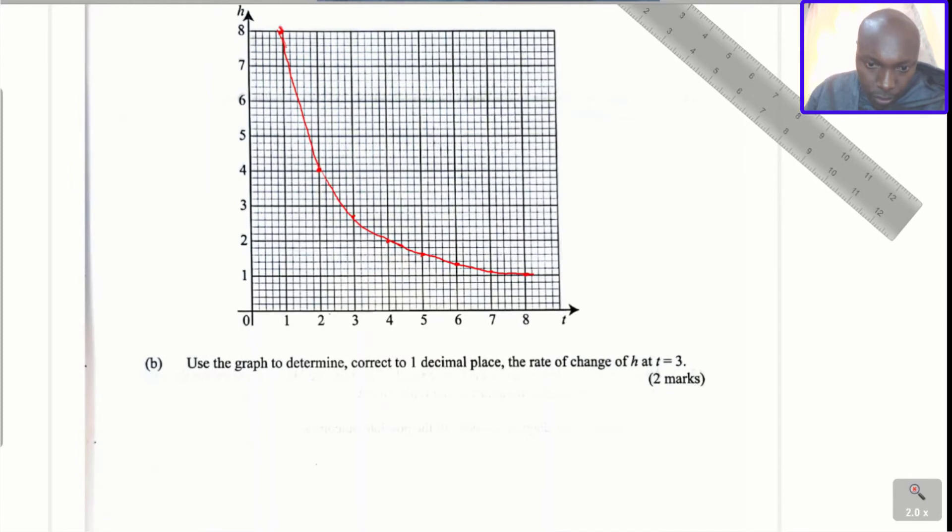After drawing, use the graph to determine, correct to one decimal place, the rate of change of h at t is equals to three. Now you need to understand what you mean by rate of change. So rate of change is the gradient. That is the gradient at t is equals to three.